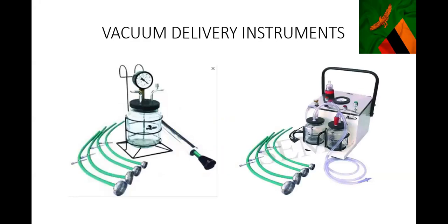These are your vacuum delivery instruments. You have a manual vacuum delivery instrument on the left side, but if you go to a labor ward like UTH, you'll find an electrical one like the one on the right. This is a vacuum delivery machine or instrument.